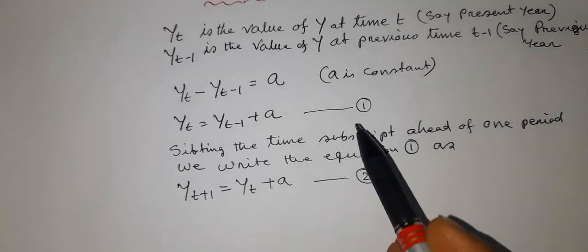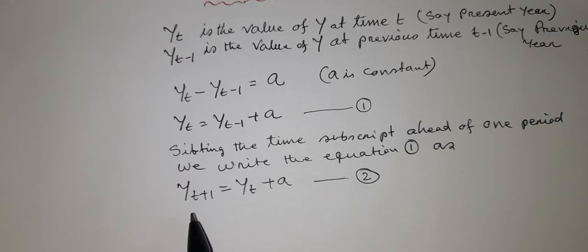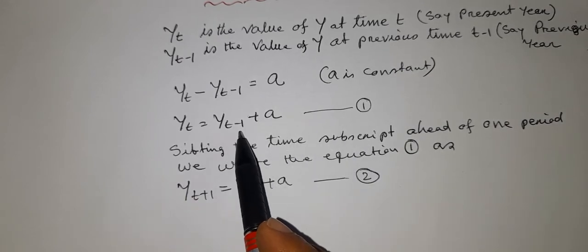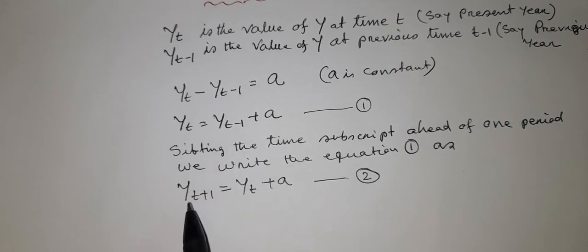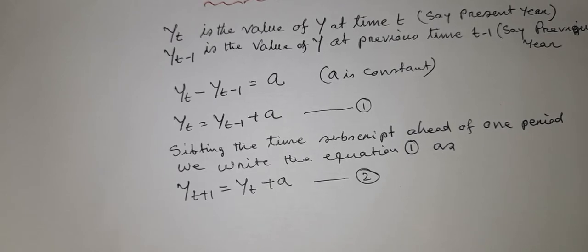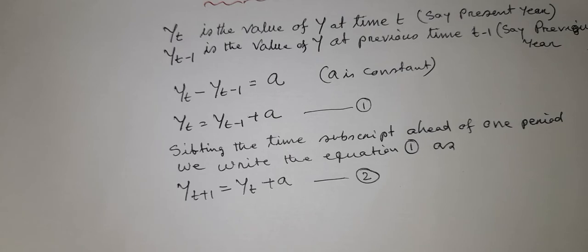Since both equations have a time lag of one period — in equation 1 that is t minus 1, and in equation 2 that is t plus 1 — they are called first order difference equations. Such equations having a time lag of one period are called first order difference equations.